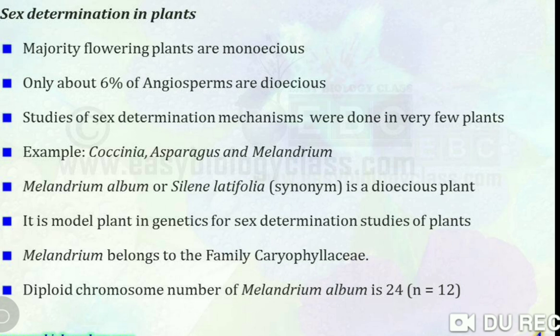In plants, there are some major points. The majority of flowering plants are monoecious. Monoecious means that in one plant, in different positions, there will be female and male reproductive organs — both organs in one plant but at different positions. It may have a male flower in one place and a female flower in another place. If both androcium and gynoecium are in one flower, that is a perfect flower.